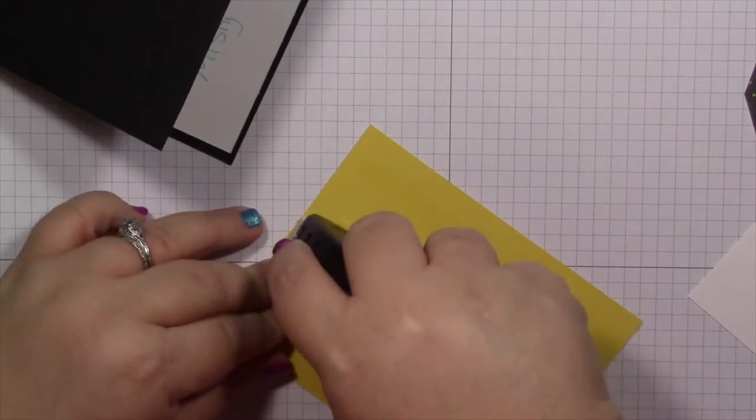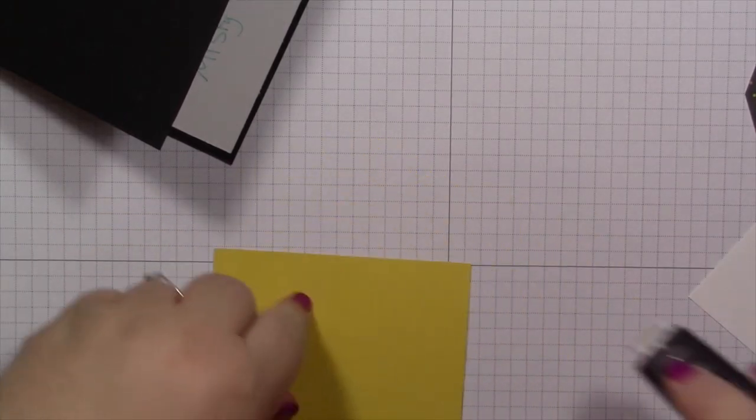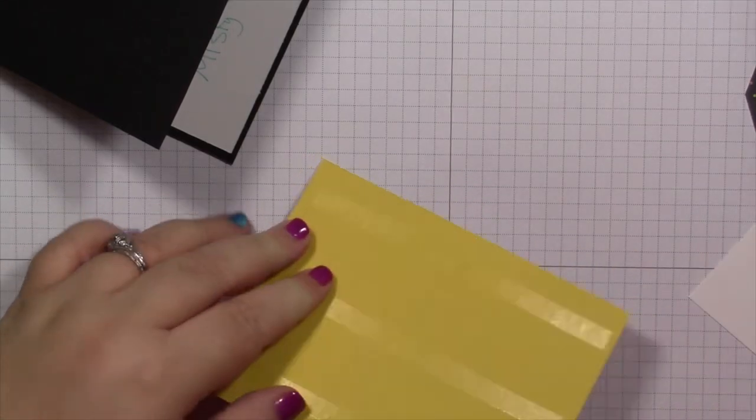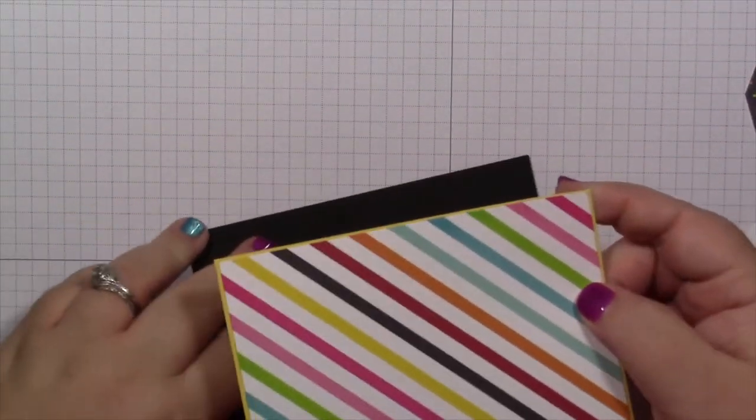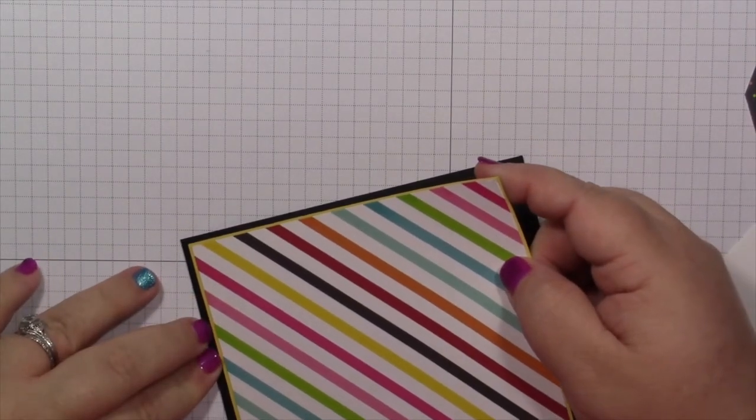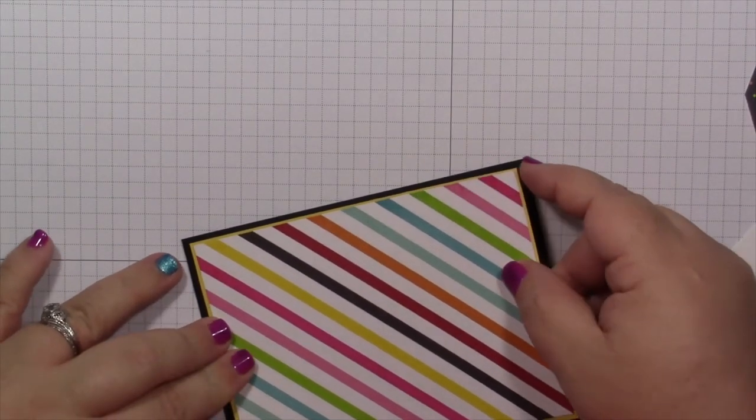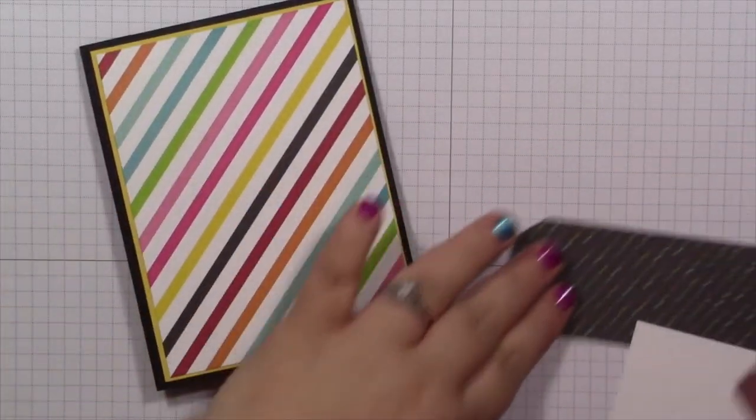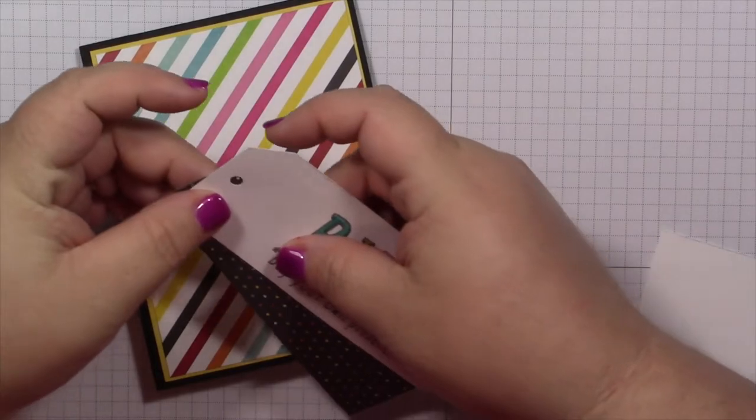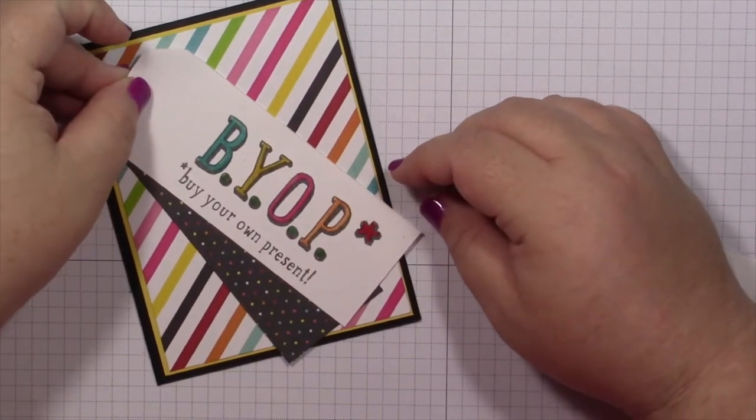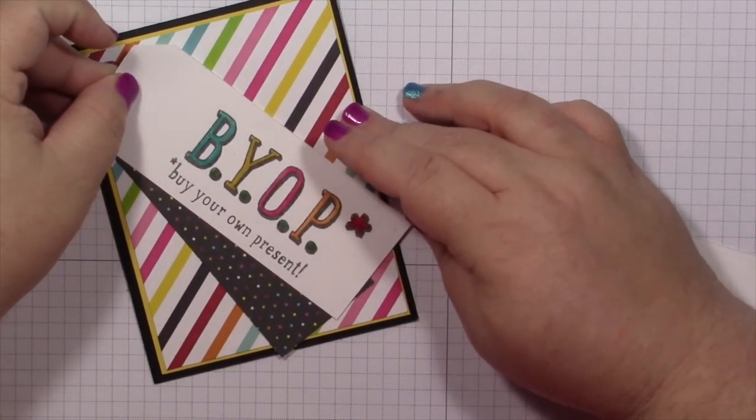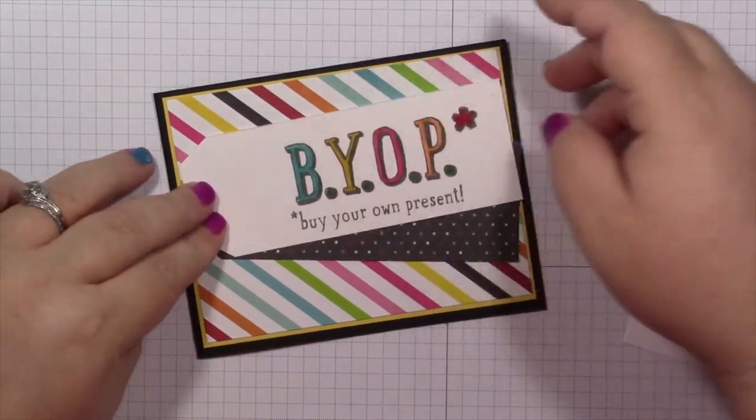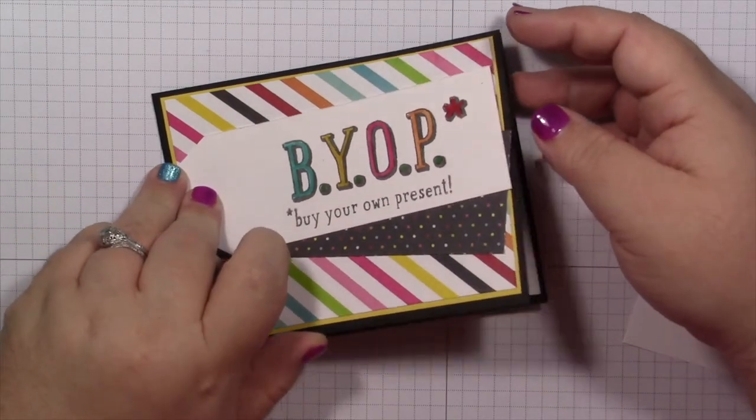Now I have this extra strip. The sentiment is going to be crooked on the front. I think it'll be all right. It's the thought that counts. She's not going to care about the card at all. She's going to care about the money. Well, maybe not. My idea was to have this on the front, but obviously it's too long because it was going to be a side-folding card.